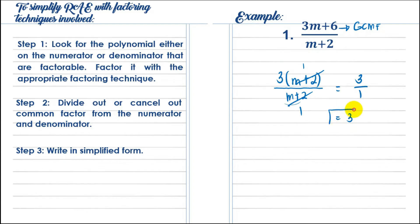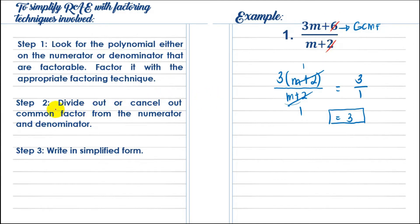This is our final answer for example number 1: 3m plus 6 over m plus 2 simplifies to 3. There is a misconception when simplifying RAE — we do not cancel terms. For example, just because 6 and 2 share a common factor does not mean we cancel them directly. Remember: what we divide out and cancel out are common factors, not terms.